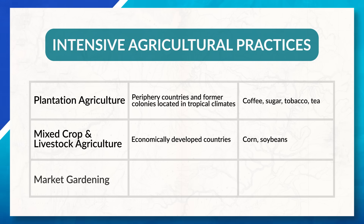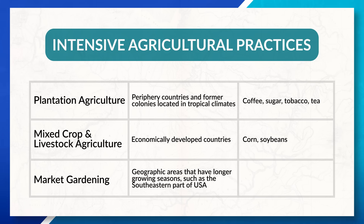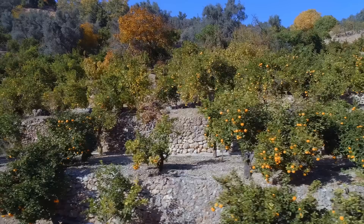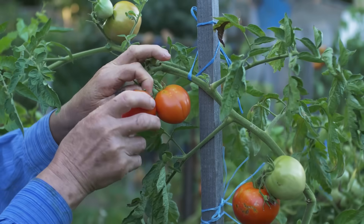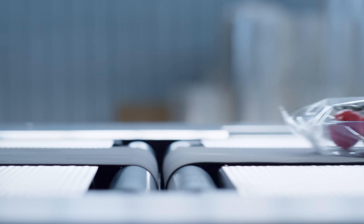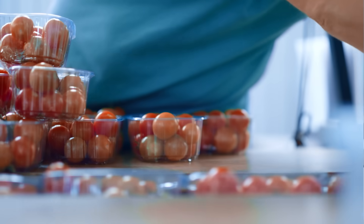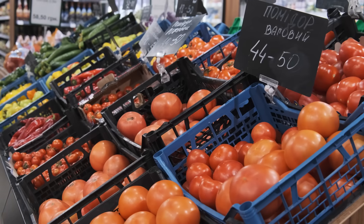Lastly, there is market gardening, also known as truck farming. This is located in geographic areas that have longer growing seasons, such as the southeastern part of the United States. Farms here often grow fresh fruits and vegetables. The food is often harvested by migrant labor to help keep costs down, and once picked, it's either frozen, canned, or processed. Then it's put onto a truck and shipped out to the market where it'll eventually be sold.